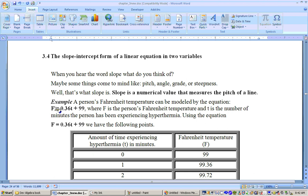For example, this equation right here tells you of a person's Fahrenheit temperature after so many minutes that they've been experiencing hyperthermia. So for example, the F is playing the role of Y, and X is the T variable right there.